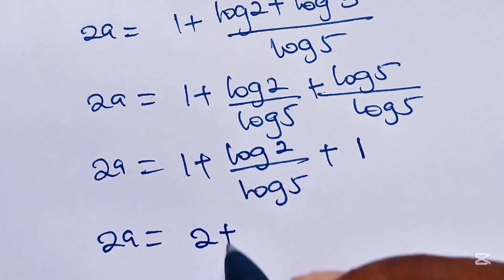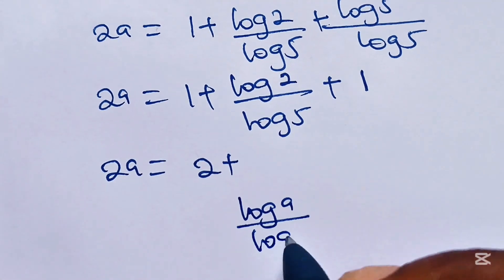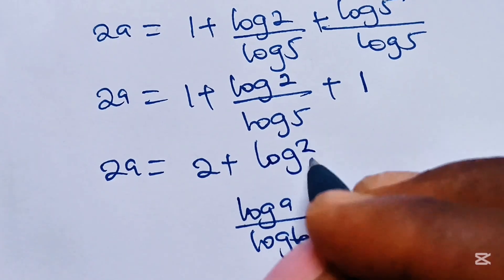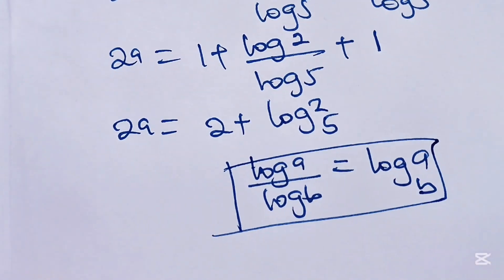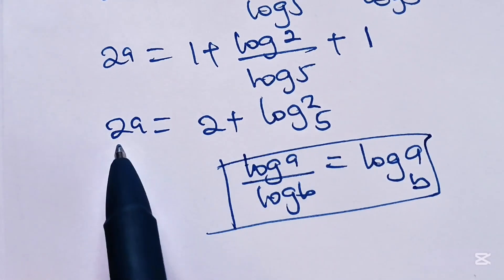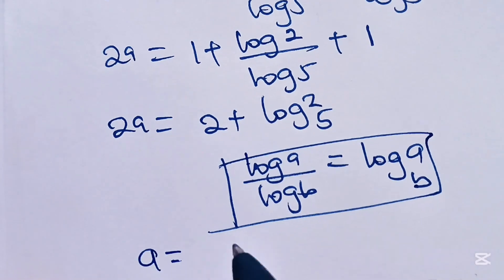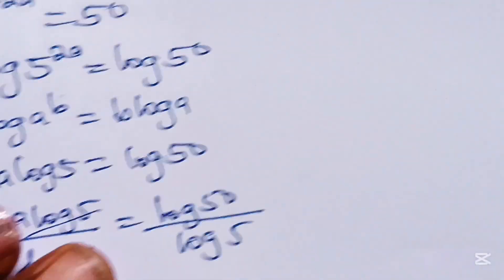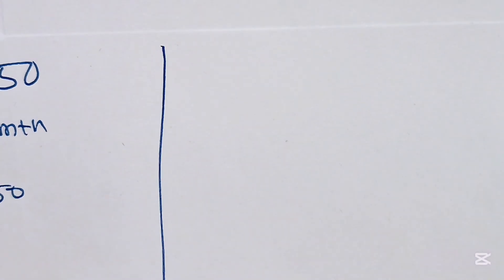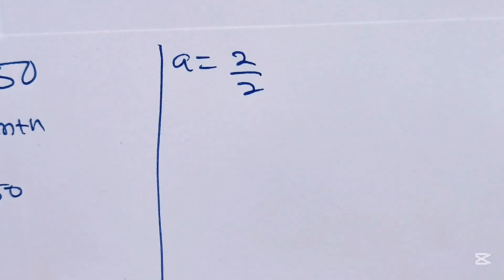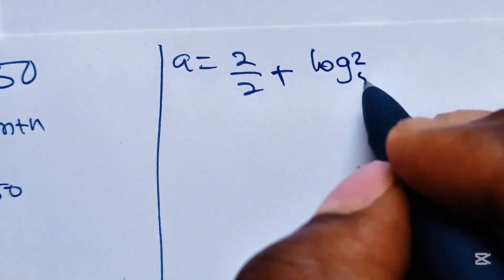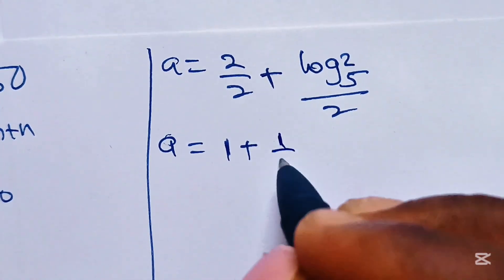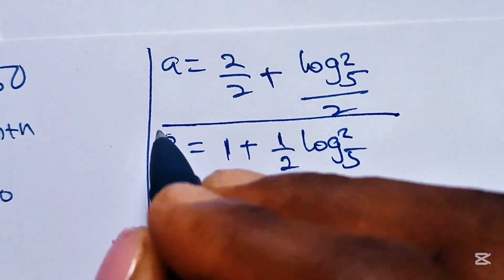So 2a equals log 5 plus log 2 divided by log 5, plus 1. That gives 2a equal to 2 plus log 2 divided by log 5. Now when you have log a divided by log b, this equals log a base b. So 2a equals 2 plus log 2 base 5. Dividing both sides by 2, a equals 1 plus half log 2 base 5. That is the value of a.